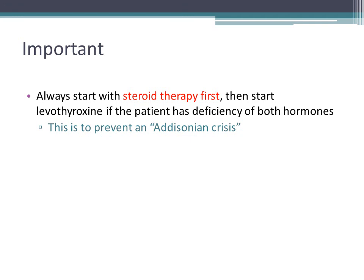If somebody presents with both adrenal insufficiency and hypothyroidism, it is always important to start steroid therapy first, then give thyroxine. Starting with thyroxine increases metabolic rate in someone who is adrenally insufficient, which might trigger adrenal crisis. In asymptomatic patients, however, both treatments can be given simultaneously without any problems.